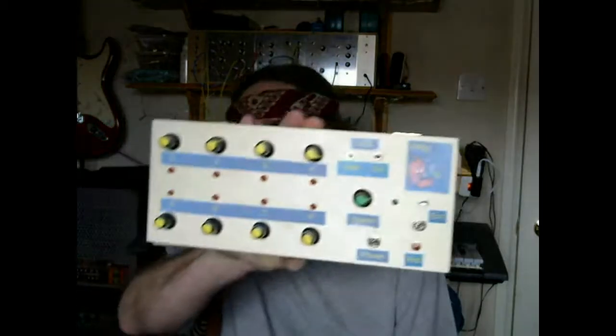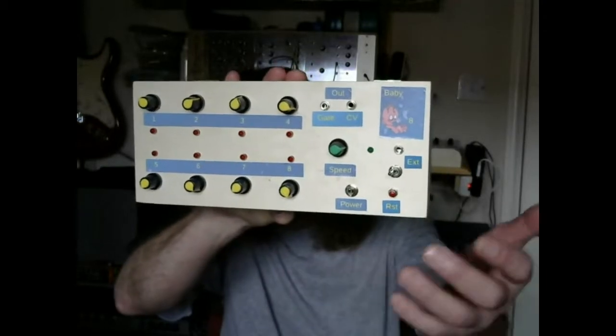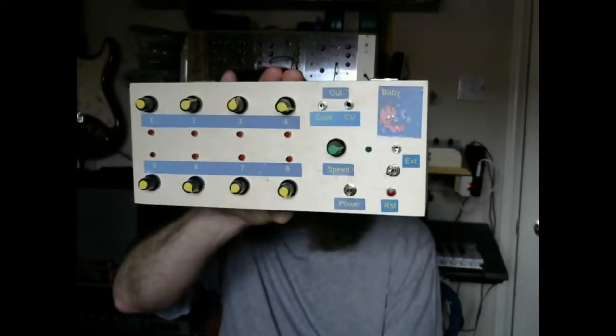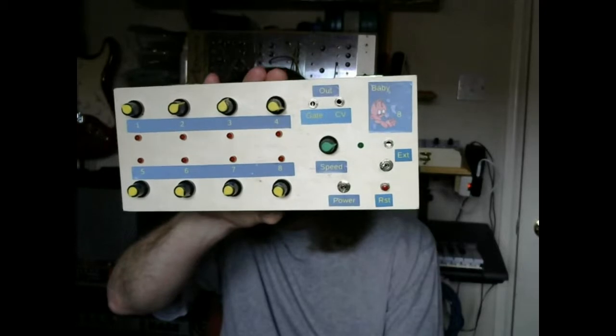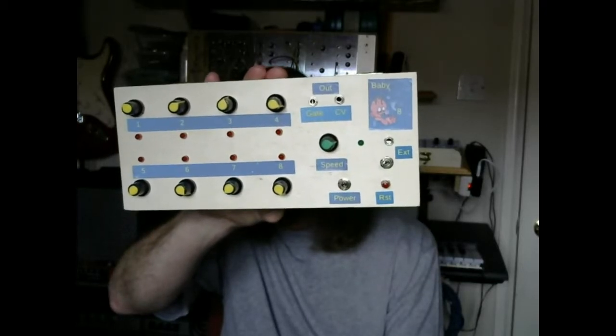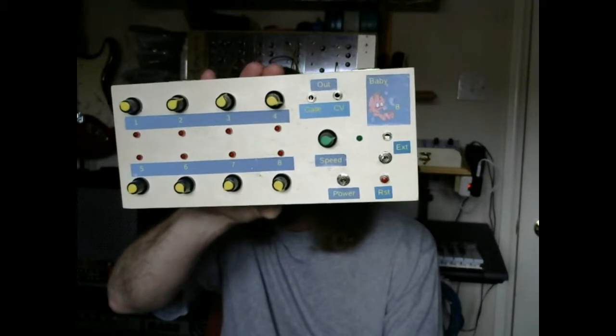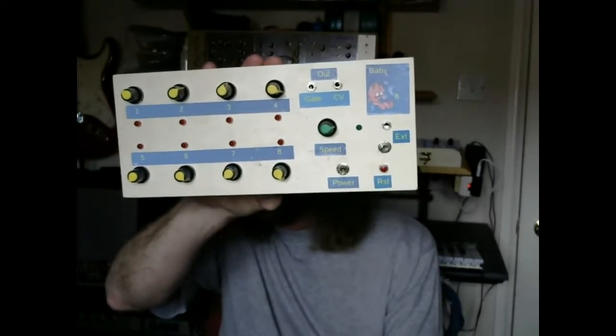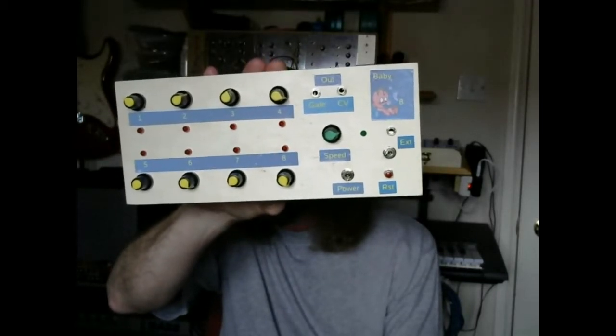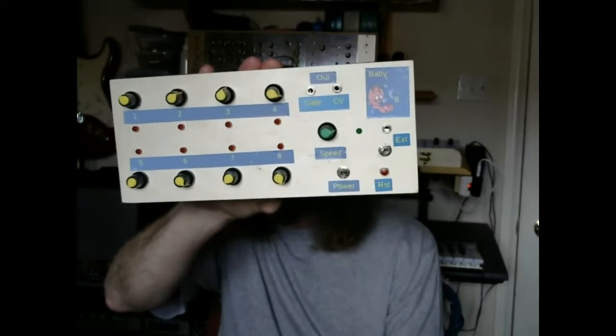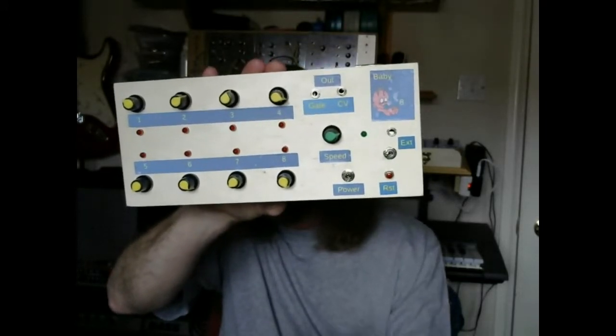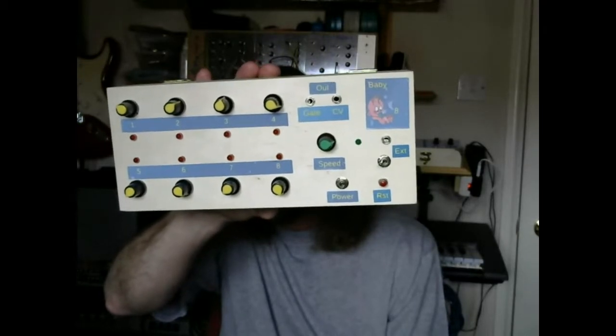So what do you need to build a sequencer? Well let's have a quick look at this one. The main sections really are eight yellow knobs there. Each knob controls the control voltage that's output at each step of the sequence.